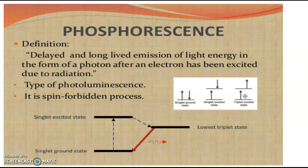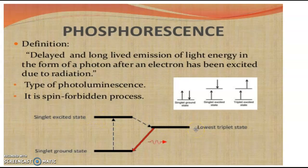So it is called the triplet excited state. In another diagram: from the singlet ground state, the electron is excited to the singlet excited state. When it comes to the lower energy, it transitions to the triplet state. After the triplet state, it comes back to the original ground state by emitting radiation. This is called phosphorescence.